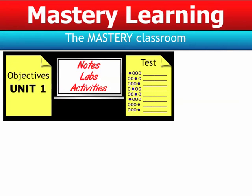Let's compare that to my Mastery classroom. In the beginning, same as the typical classroom, we start with objectives on Unit 1. In class, we talk about notes, labs, activities — all those things to try to cement the ideas. And at the end of it, just like a typical classroom, they take a test. And on the test, same grade as before — they get a D.